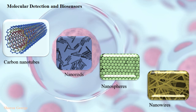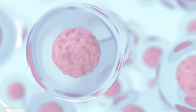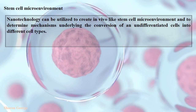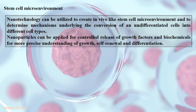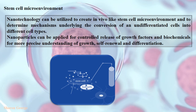Next is the stem cell microenvironment. A crucial challenge in stem cell microenvironment research is to develop an in vitro system that accurately replicates the function of the in vivo microenvironment. Nanotechnology can be utilized to create an in vivo-like stem cell microenvironment and to determine the mechanisms underlying the conversion of undifferentiated cells into differentiated cell types. These nanoparticles can also be applied for the controlled release of growth factors and biochemicals for a more precise understanding of stem cell growth, self-renewal, and differentiation.